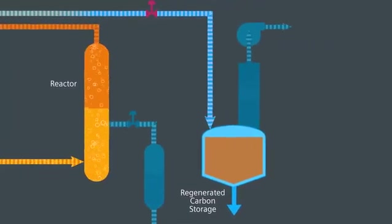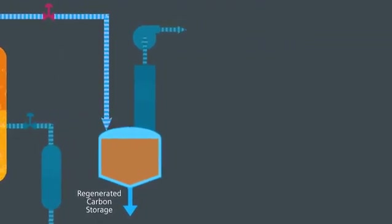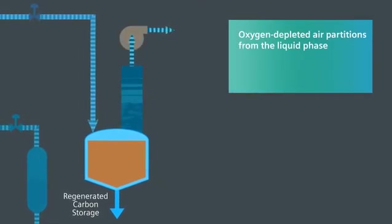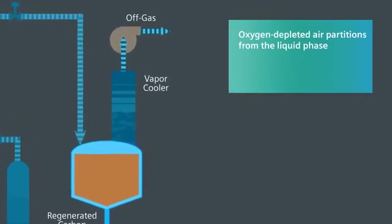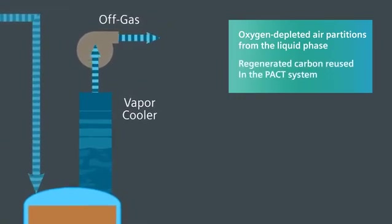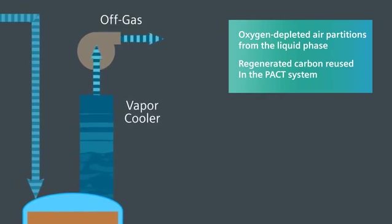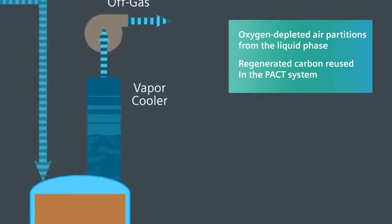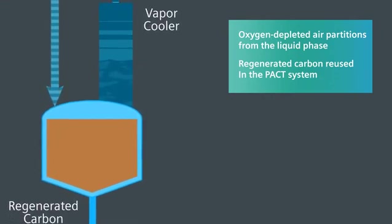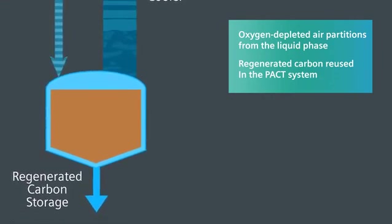Once the regenerated carbon mixture arrives at the storage tank, the oxygen-depleted air partitions from the liquid phase. The outgoing gas is water-scrubbed and injected into the PACT system, eliminating any requirements for air emission permitting. The slurry containing the regenerated carbon is transferred back to the PACT system.